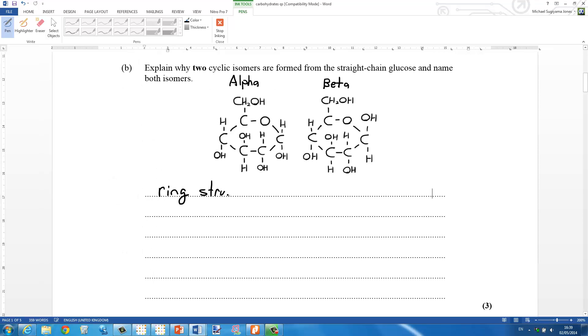Moving on to the cyclic structures of glucose, we have the two cyclic structures. It's alpha on the left, beta on the right, and the difference is the ring structure with the OH group on C1, carbon number 1, is on the different side of the ring.